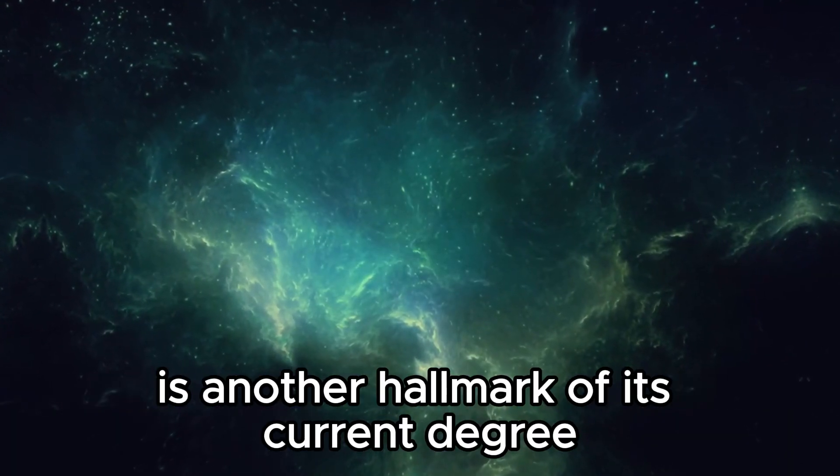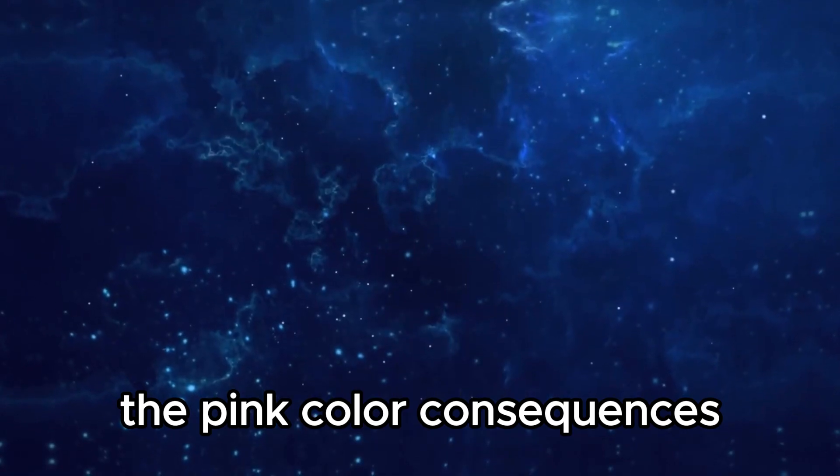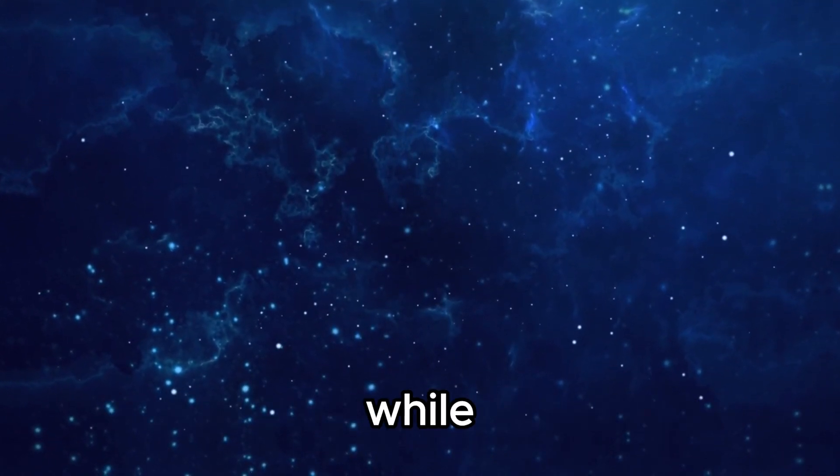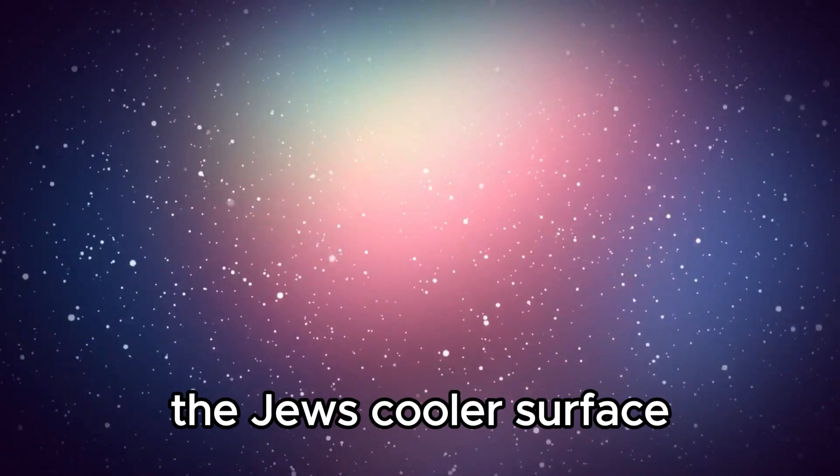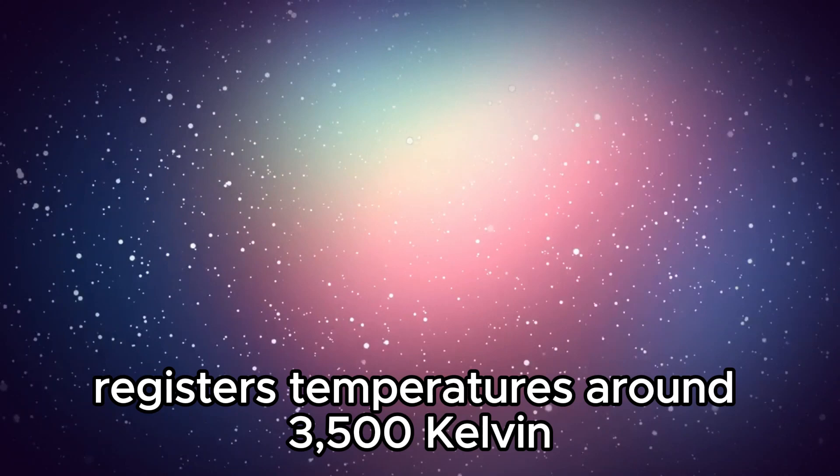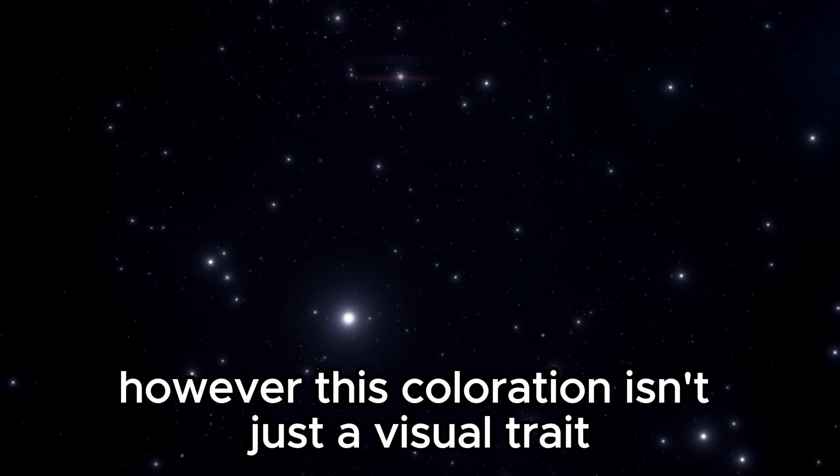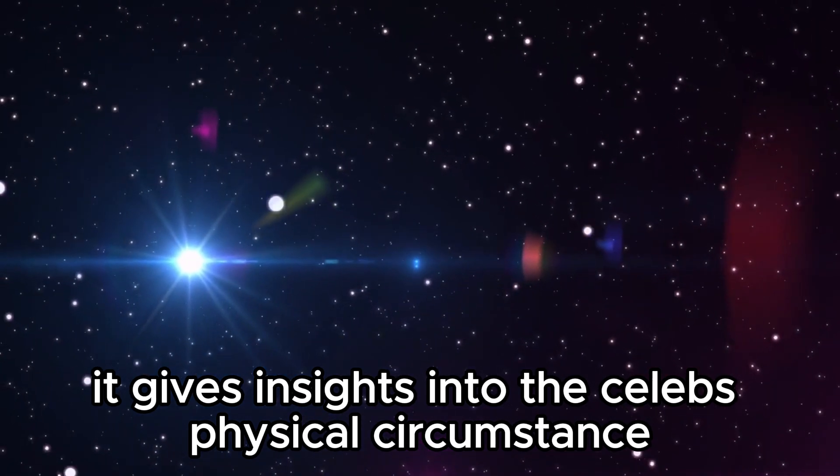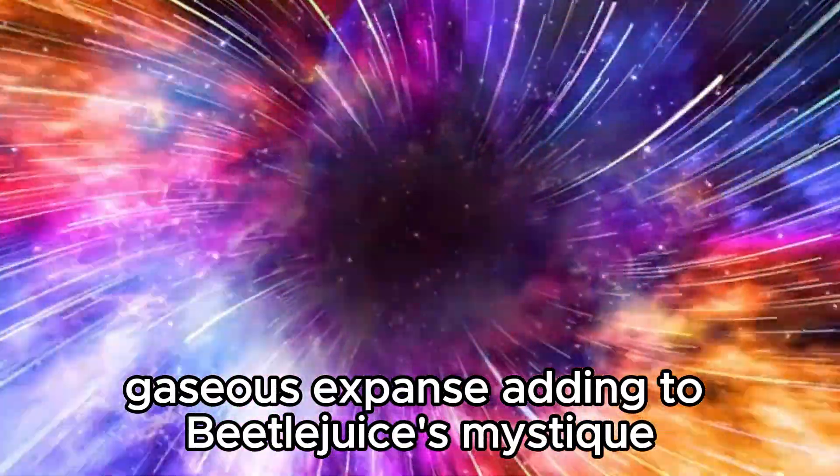Betelgeuse's distinctive hue is another hallmark of its current stage. The red color results from its relatively cooler surface temperature compared to stars like our sun. While the sun's surface temperature is about 5,500 Kelvin, Betelgeuse's cooler surface registers temperatures around 3,500 Kelvin, allowing it to emit light at wavelengths that give it a red appearance. However, this color isn't just a visual trait. It gives insights into the star's physical condition and the processes happening inside its significant gaseous expanse.